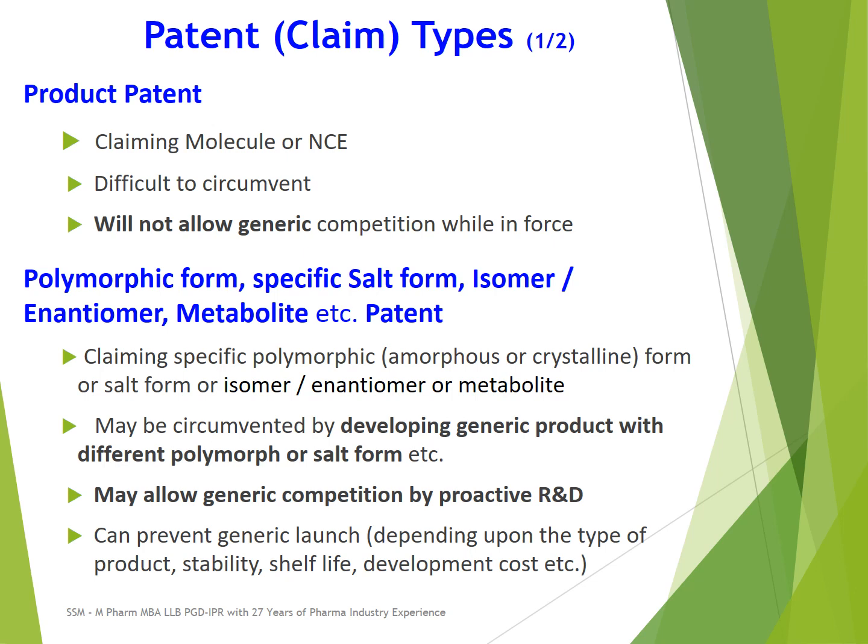The next patent type claims a polymorphic form, such as different amorphous or crystalline forms, or different salt forms like sodium, potassium, or calcium salts. It may also claim an isomer, enantiomer, or metabolite of the product.